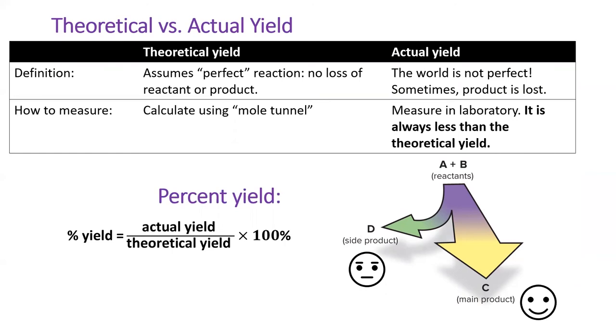While a perfect reaction will theoretically give 100% yield, in real life this is rarely the case. To solve the problem, we'll do the stoic dance to calculate the theoretical yield, then compare it to the actual yield. Let's try it out.